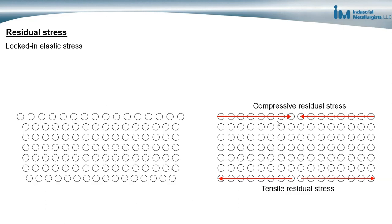We see in the right-hand image that the atoms in the top row tried to expand but are constrained from expanding by the neighboring metal atoms. As a result, the atoms in the top row are under a compressive residual stress.